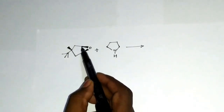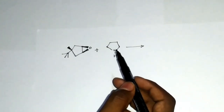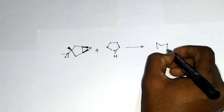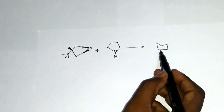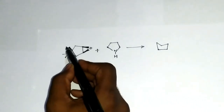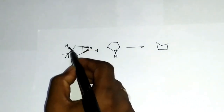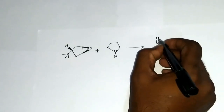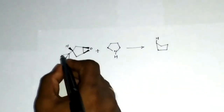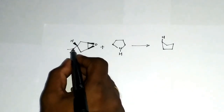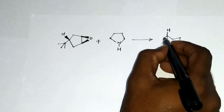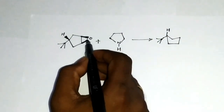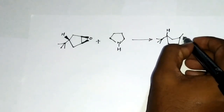This is a cyclopentane ring. Let us draw the chair form of the cyclopentane ring in this way. This is the chair form of the cyclopentane ring. If you look here, the hydrogen is above the plane of the paper, so I am drawing it in the axial position. This group is in the equatorial form, so it will come on this part. The epoxide ring is above the plane of the paper, so it can be drawn in this way.